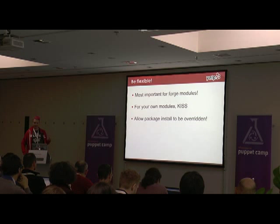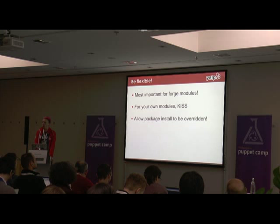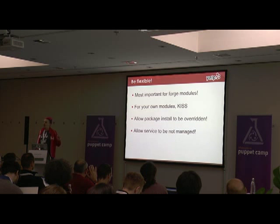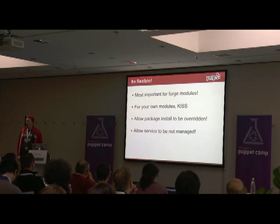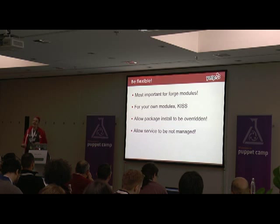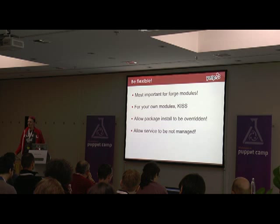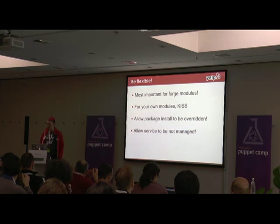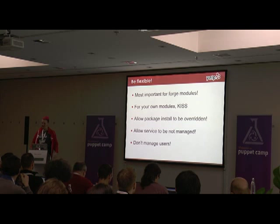The two key things I found when looking at Forge modules: allow the package installed to be overridden — in a default case you probably want to manage the package, but if they are using some other operating system, allow them to manage the package themselves. On the same note, allow people to not manage the service. For example, I have been doing a load of stuff with Docker, and any Puppet module that tries to activate services inside a Docker container — I'm not running Upstart inside Docker containers while I'm building them, and this causes explosions and sadness and pain. The other thing is do not manage users in your modules. As soon as you start adding users in your modules, you are building a massive bunch of pain. Keep your user management outside your reusable modules.